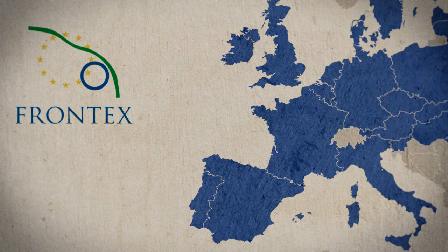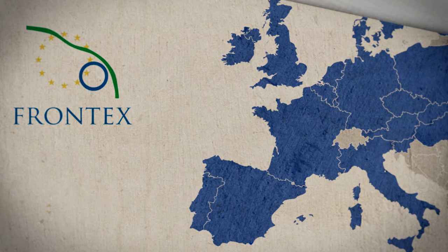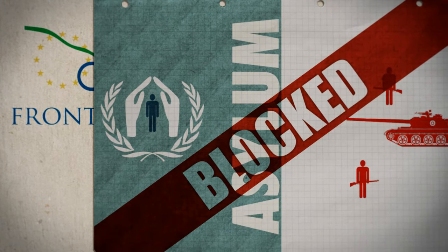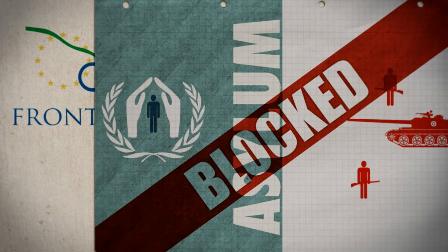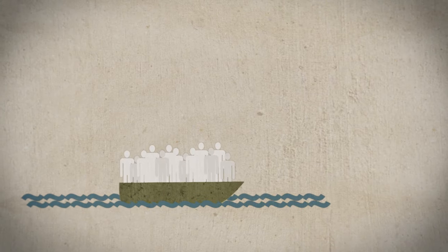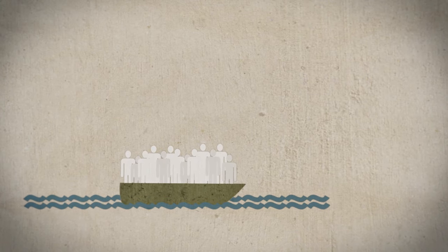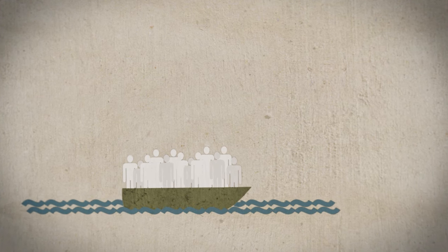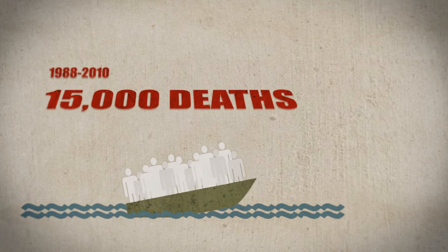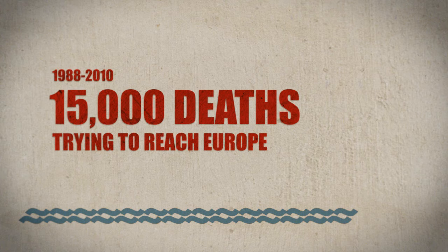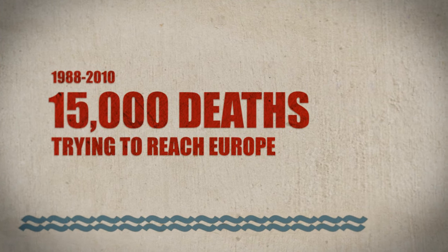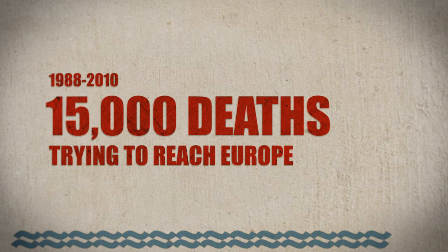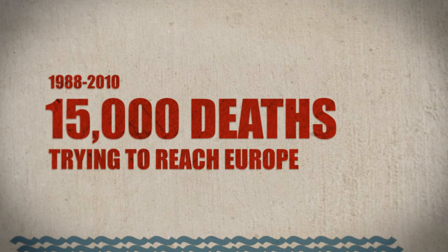Human rights groups point out that many refugees with a legitimate claim for asylum are blocked this way. It is increasingly difficult to reach Europe. The result is that migration attempts are getting more and more risky and often end disastrously. According to conservative estimates, between 1988 and 2010, approximately 15,000 people died attempting to reach the EU — more people than at any other border in the world.